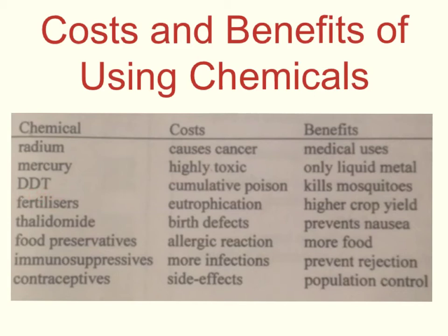DDT is an example of an insecticide with a similar cumulative effect to mercury — it's a cumulative poison and a really effective insecticide, but it's been banned in developed countries because it accumulates in the food chain and higher order consumers end up receiving most of it as a poison. The dilemma is that in developing countries, it is really effective at controlling malaria because it's so good at killing mosquitoes, so there's an ethical issue around whether it should be used.